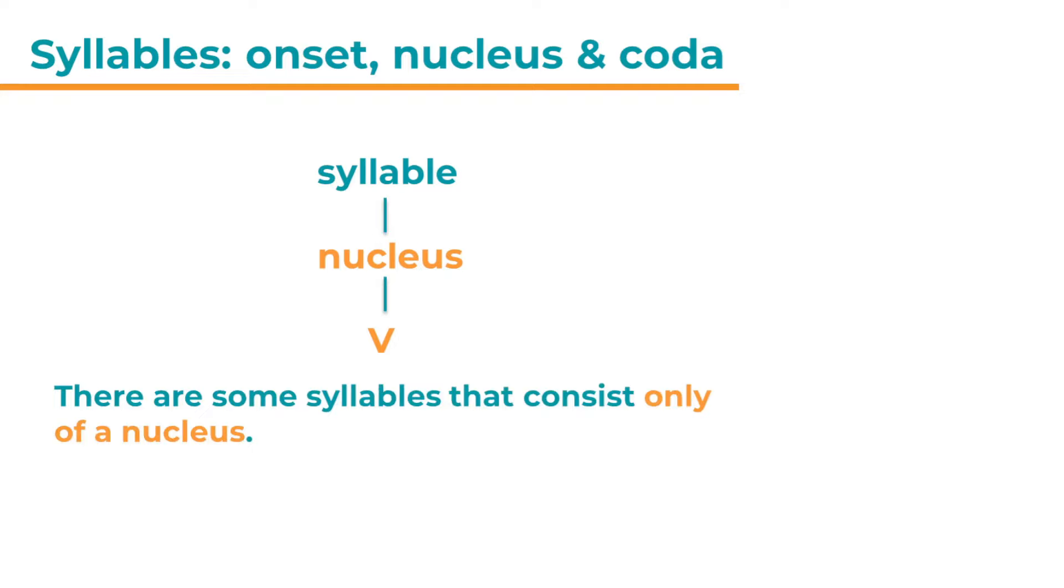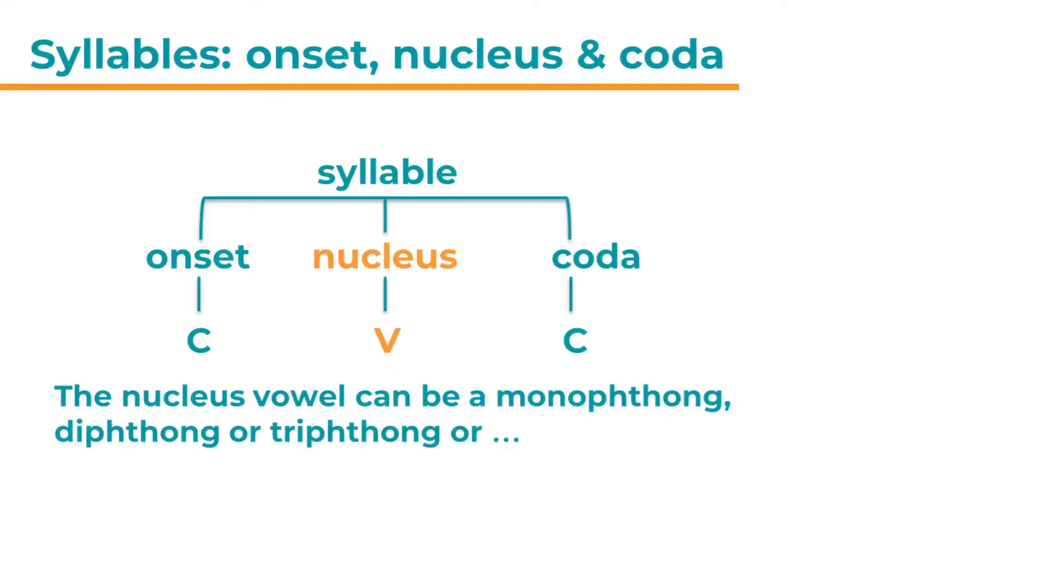Now, there are some syllables that consist only of a nucleus. They don't have an onset and a coda. For example, I or air. Again, these two examples are also full words, but they could also be just syllables forming part of a word. The nucleus vowel can be a monophthong, a diphthong, or a triphthong, or there's one other option. It could also sometimes be a syllabic consonant.